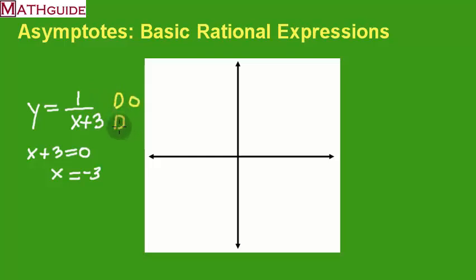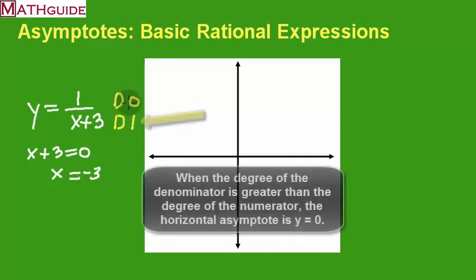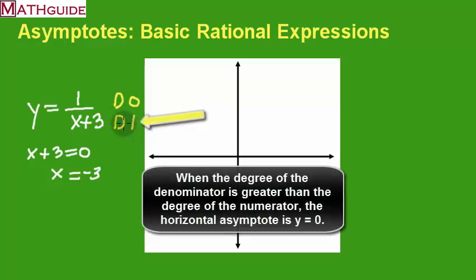What's the degree of the denominator? I've got 1x. That's x to the 1st, so that's degree 1. In this case, you can see that the degree of the denominator is larger than the degree of the numerator. And in that case, when the denominator has a larger degree, it's really simple to get the horizontal asymptote.